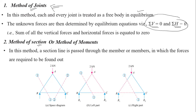For the method of sections, when forces in only a few members of the truss are to be determined, this method is preferred. The section line is passed through the members in which the forces are to be determined. One important limitation is that the section line should not cut more than three members.